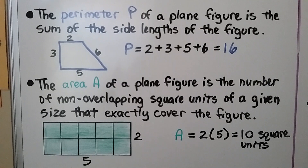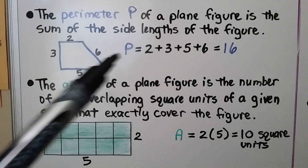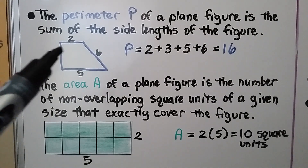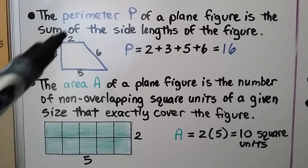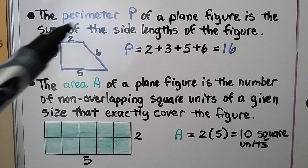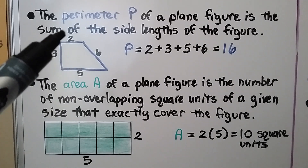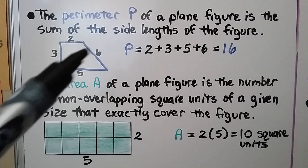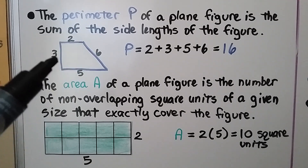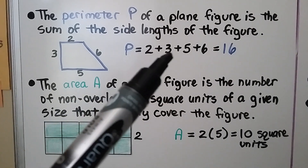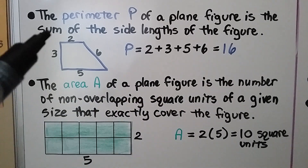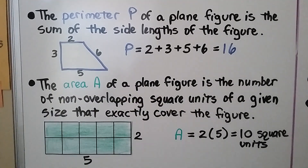The perimeter, P, of a plane figure is the sum of the side lengths of the figure. We have sides that are 2 units, 6 units, 5, and 3. We just add 2 plus 3 plus 5 plus 6. The perimeter is 16 units.